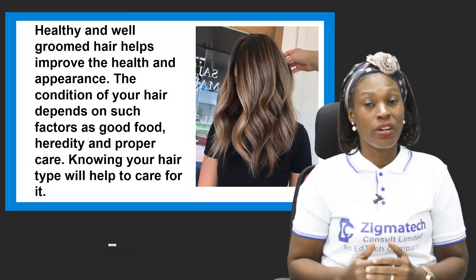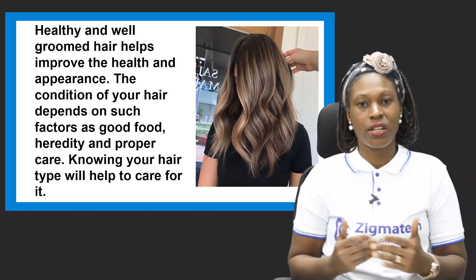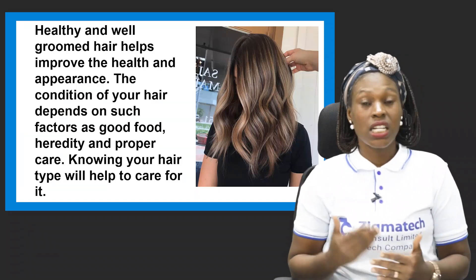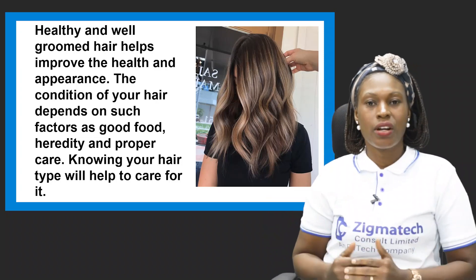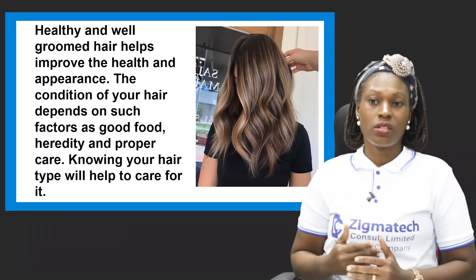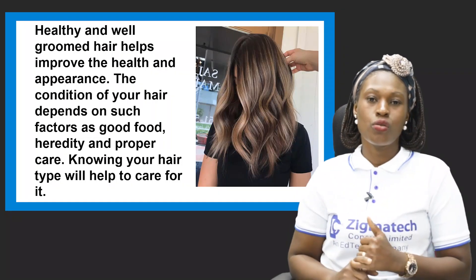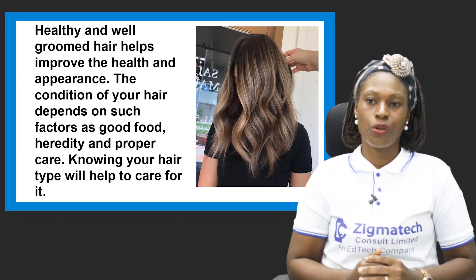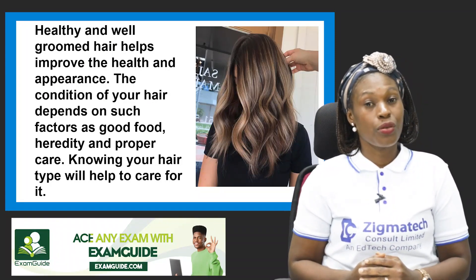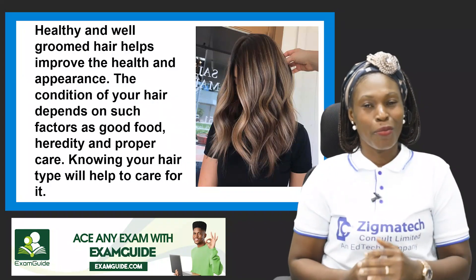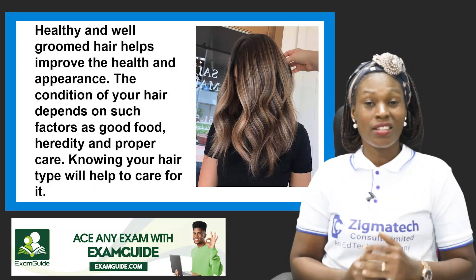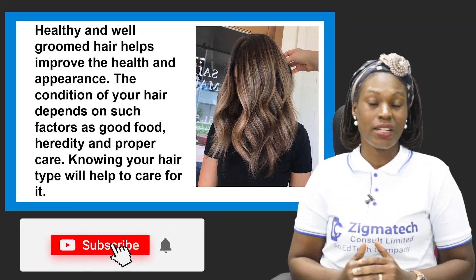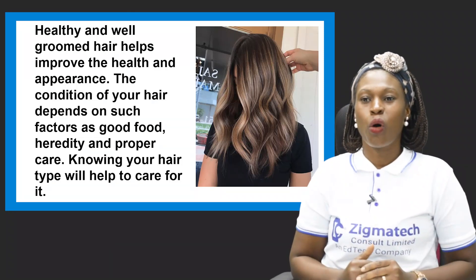The condition of your hair depends on heredity and good food. Some persons get it from their genes — from grandparents, parents, and so on. So factors like heredity and good food matter. Also, if you take time to care for your hair properly, it will be healthy and well-groomed. Knowing your hair type is also important — go back to our previous video where we discussed the different hair types.